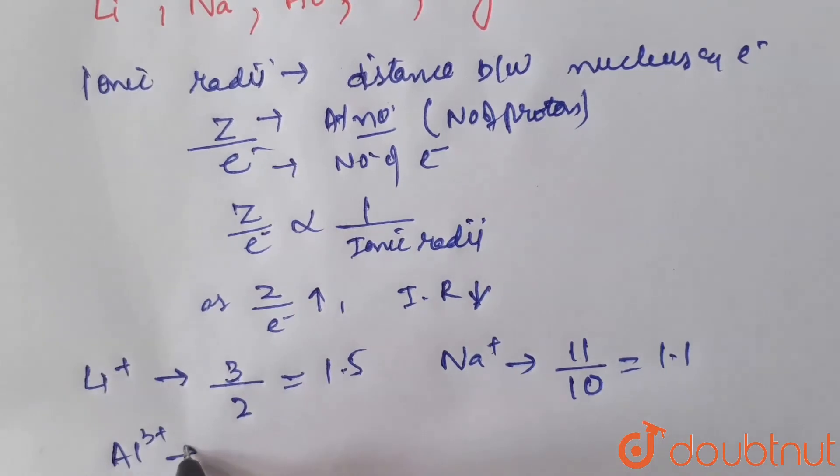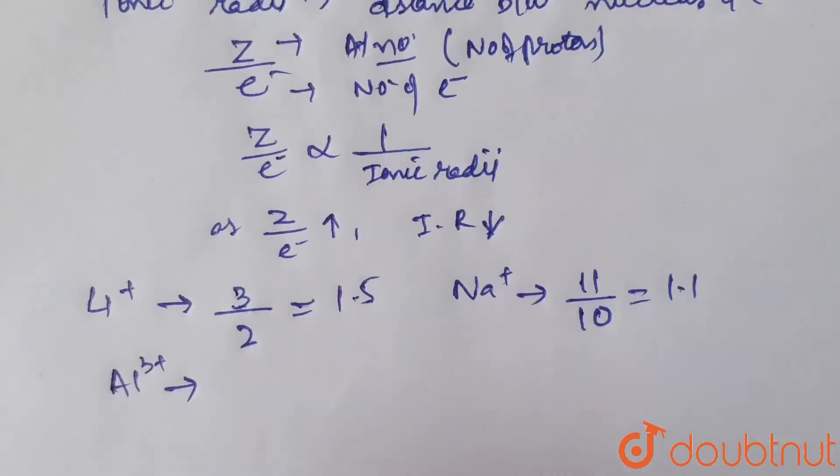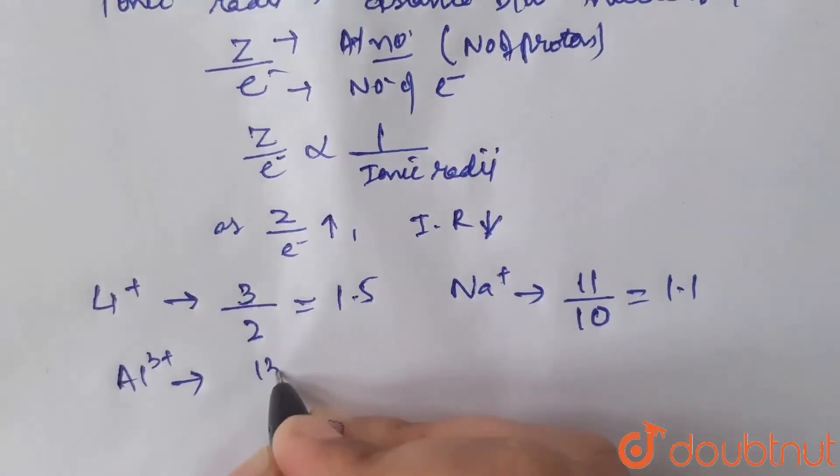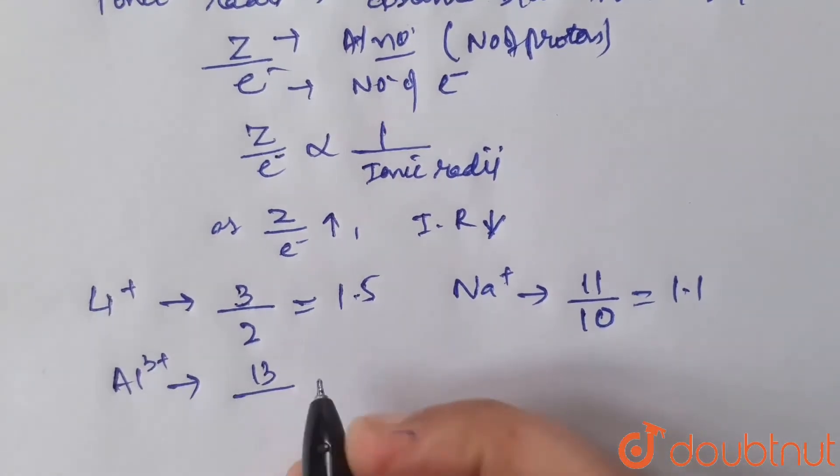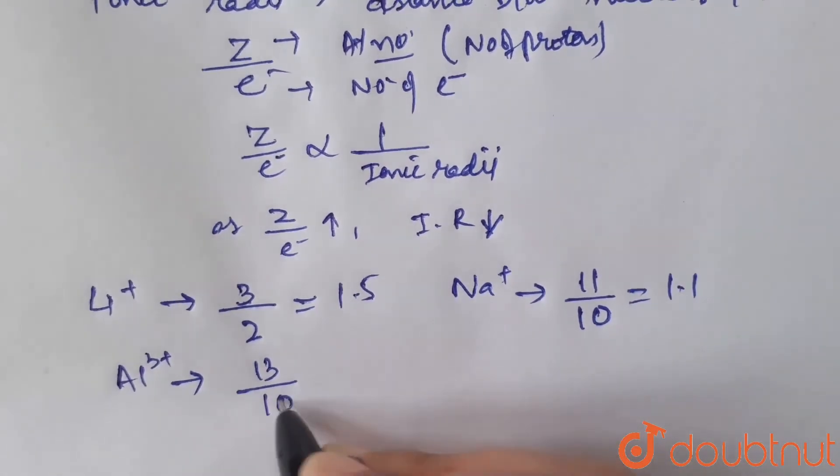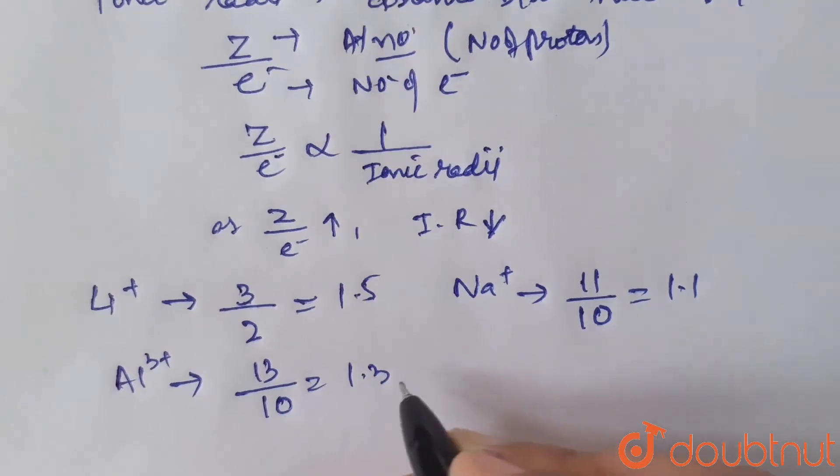Al3+, atomic number is 13, and it is Al3+ so it has 10 electrons. The ratio becomes 1.3.